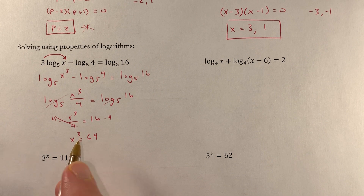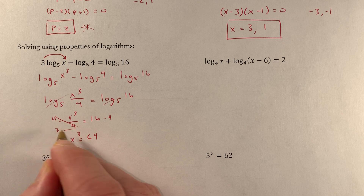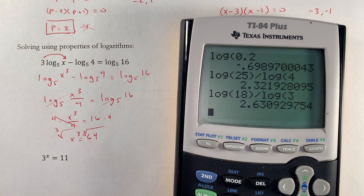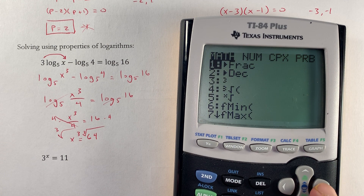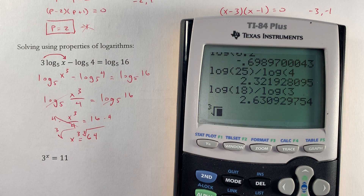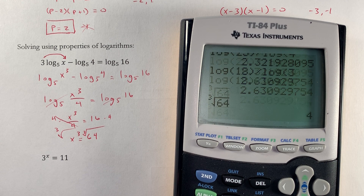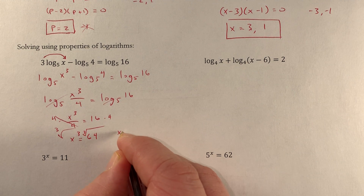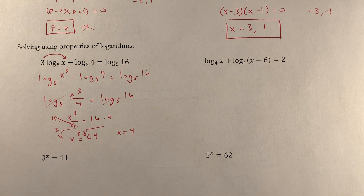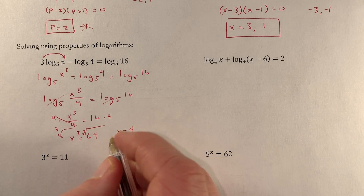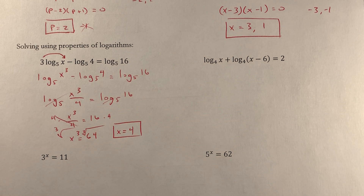To get rid of the cube, I take the cubed root of both sides. The cubed root of 64 is 4, so x equals 4. Checking: the only argument with a variable gives 4 cubed, which is a positive argument — that checks out just fine.